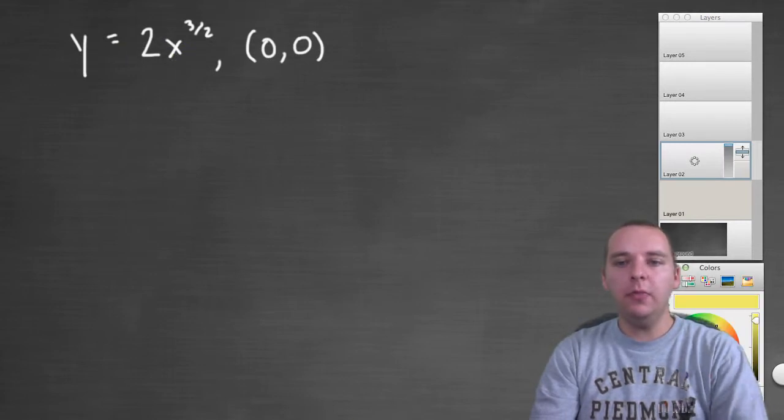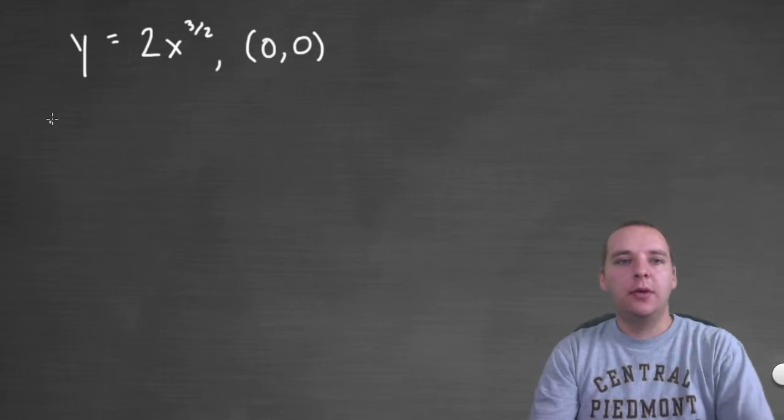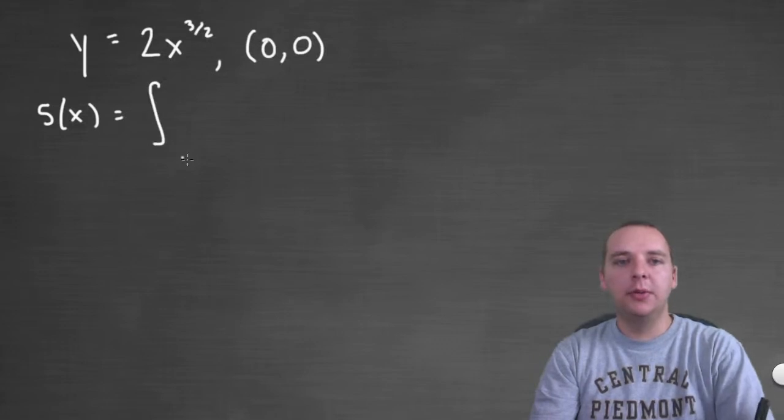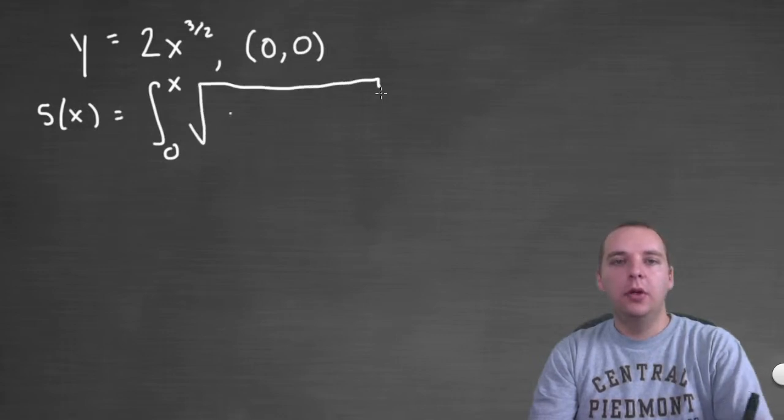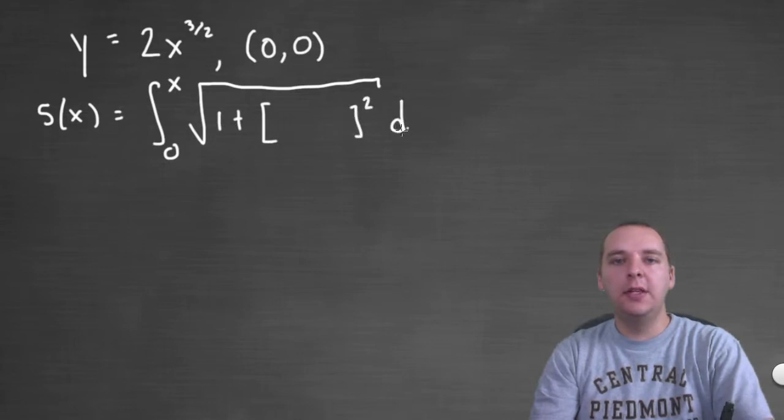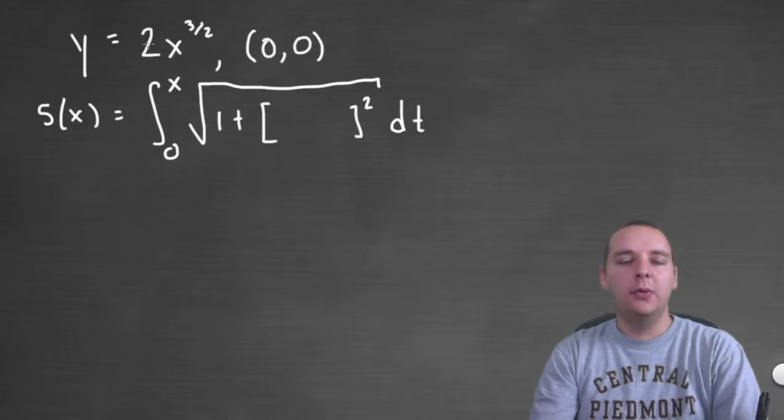Okay here's our curve and let's get right to it. So we'll have s of x will be the integral starting at zero and ending at x. And then we'll have the square root of one plus something squared dt. Now we have to figure out what this something is. So y equals 2x to the 3 halves.